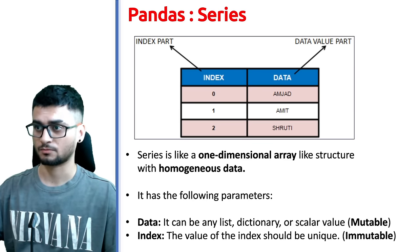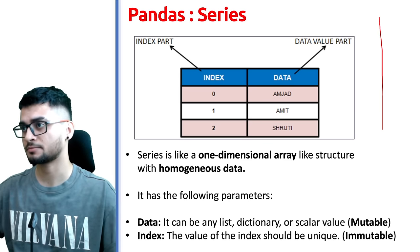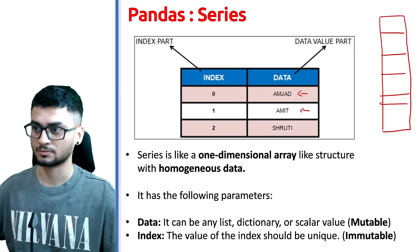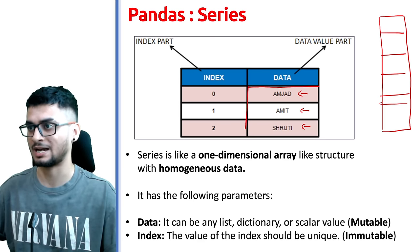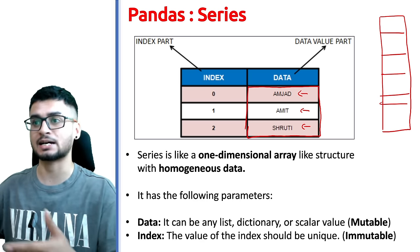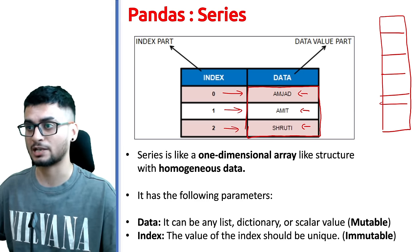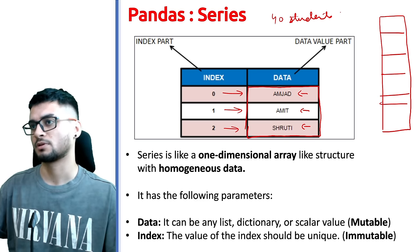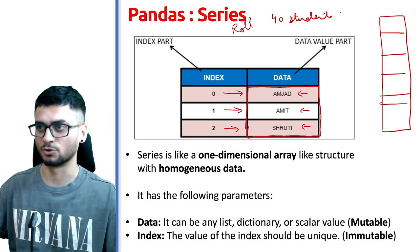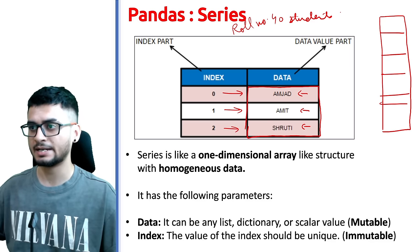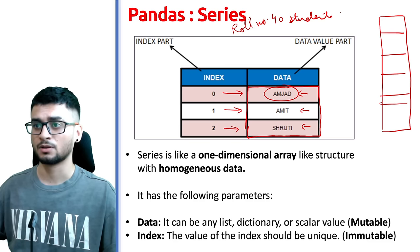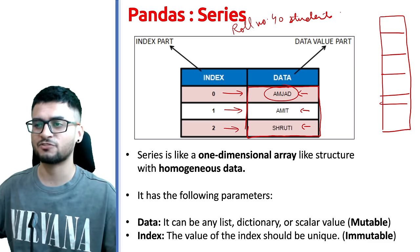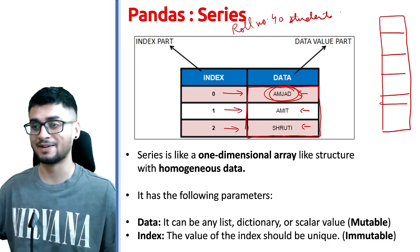Series is like a column. It is not just about the values inside — for example just names as the actual data — but when you create a series there is an index which tells us the serial number for each value. For example, if you have 40 students in your class, every student has a roll number. Same thing goes with series — every data point has an index. This index can start from 0, but you can also change it.